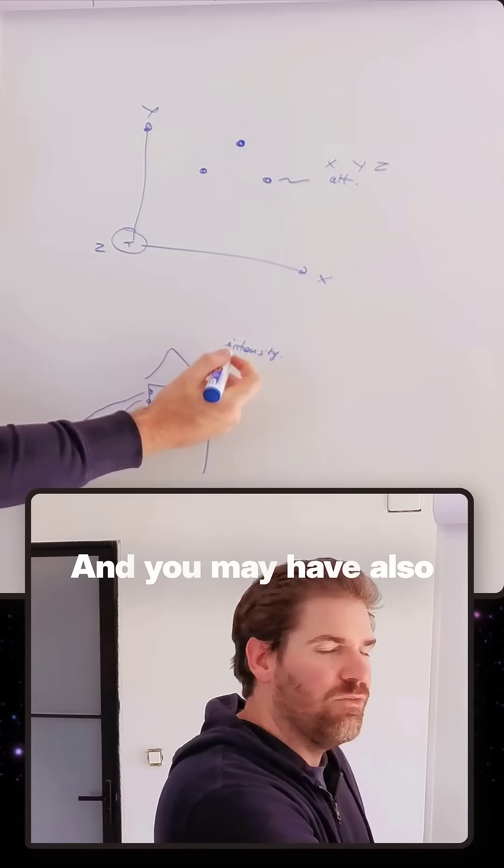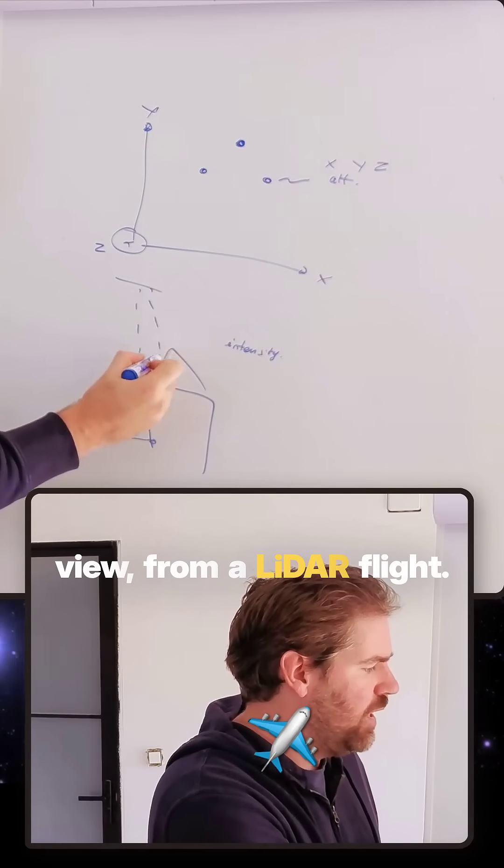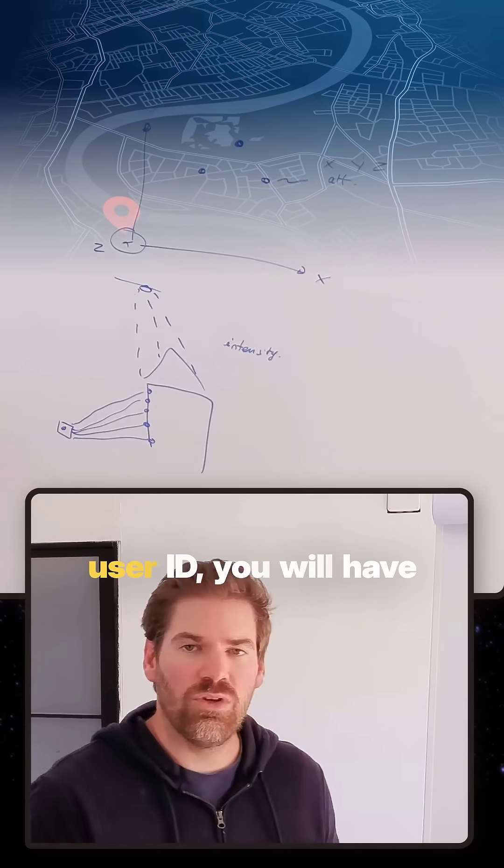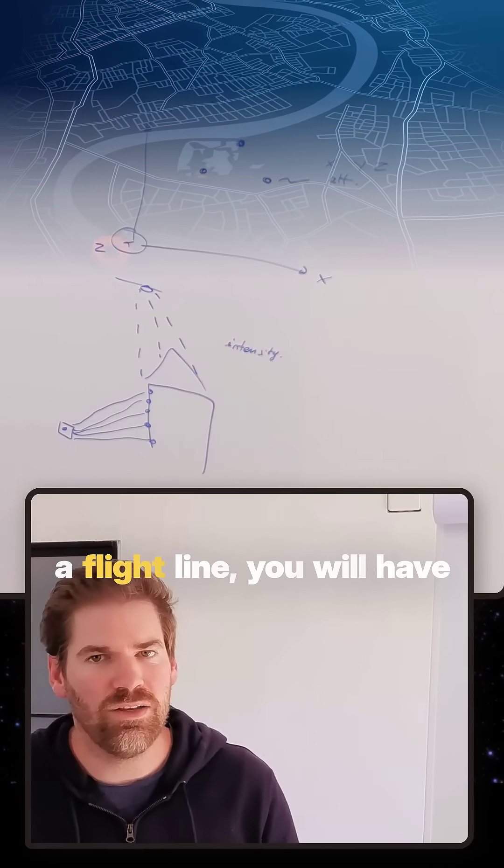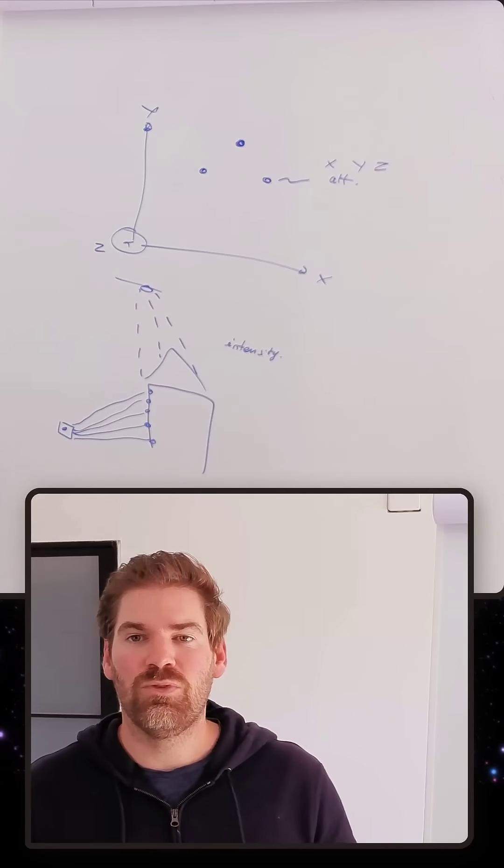And you may have also other information if it's from a top-down view, right, from a LiDAR flight. You will have a point user ID, you will have a flight line, you will have a GPS tag. All these kind of things are part of attributes.